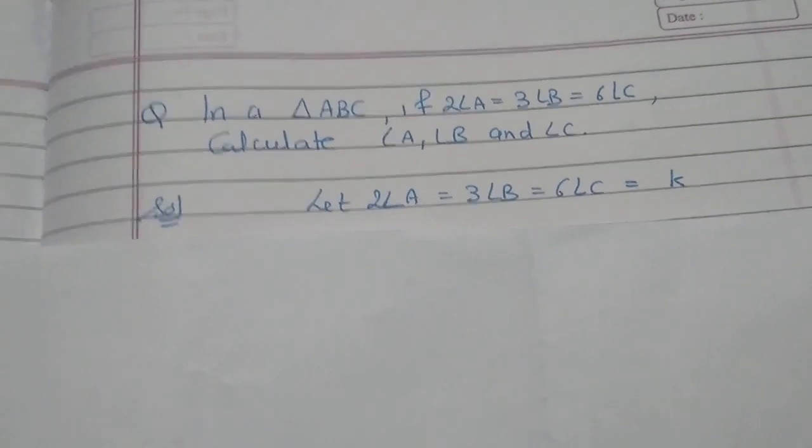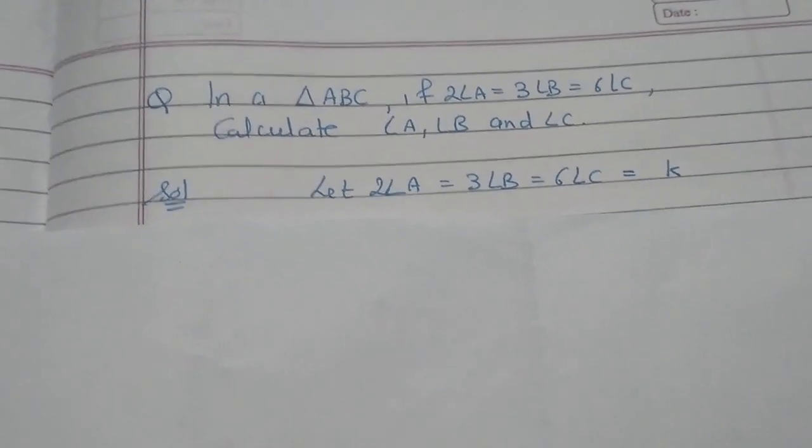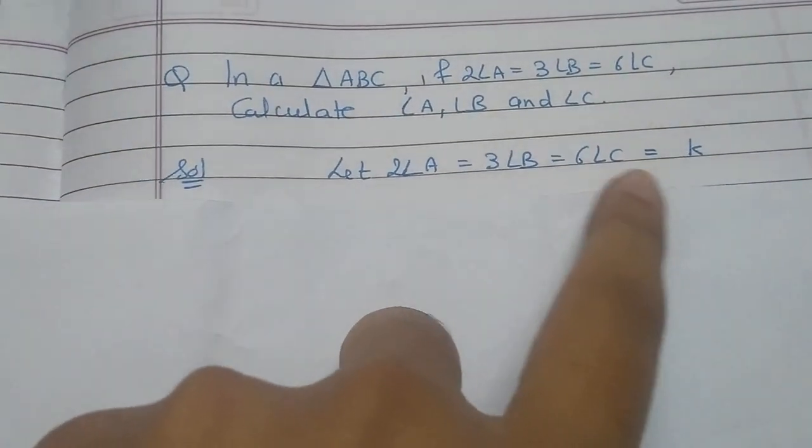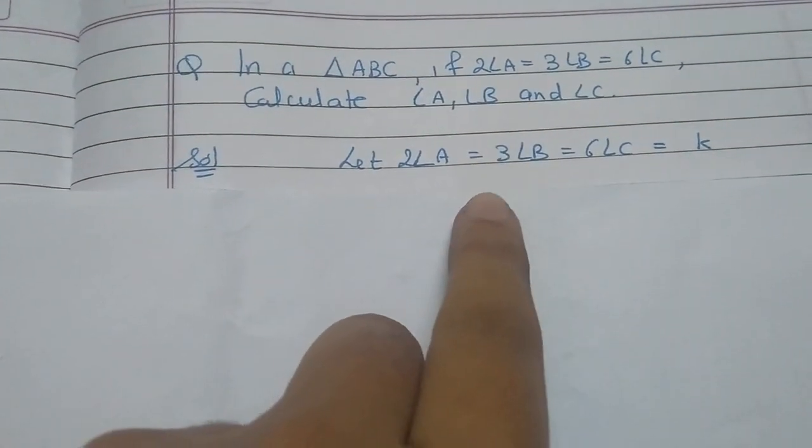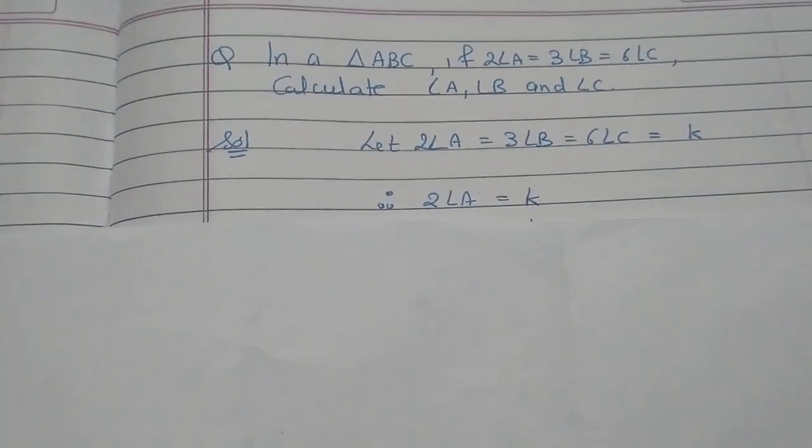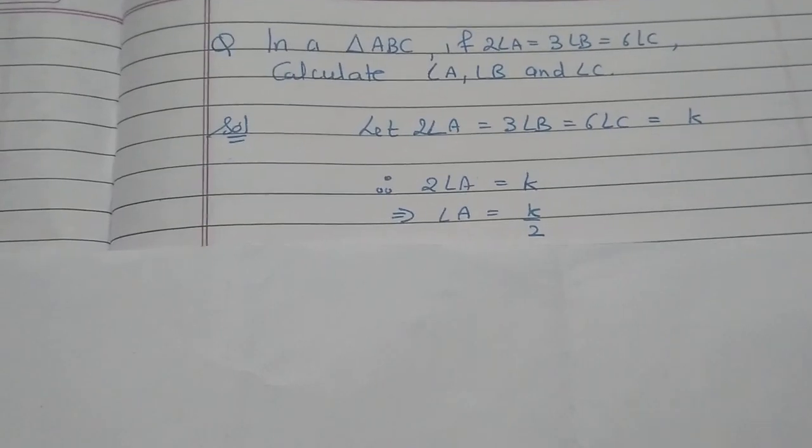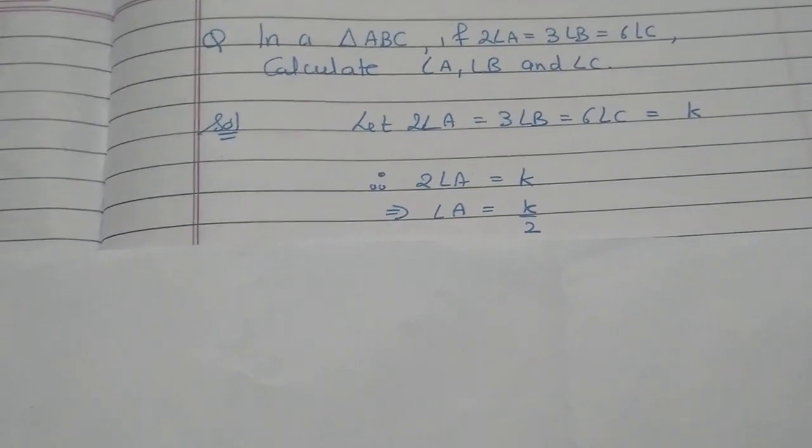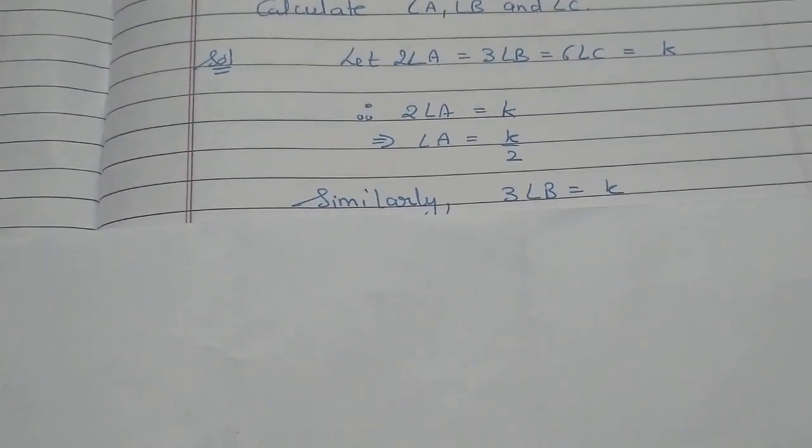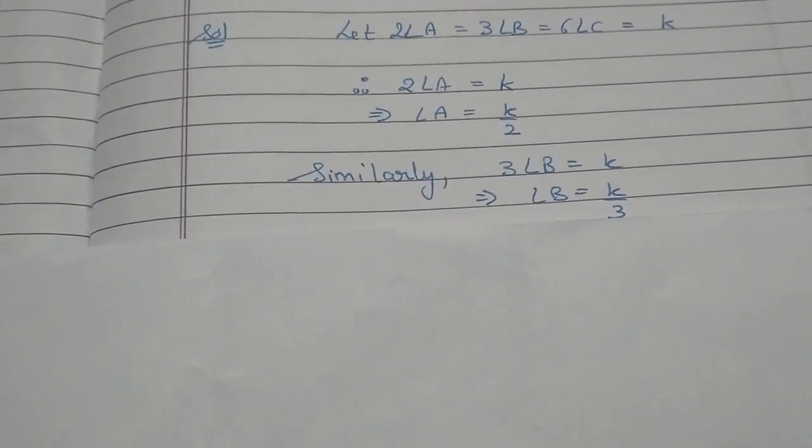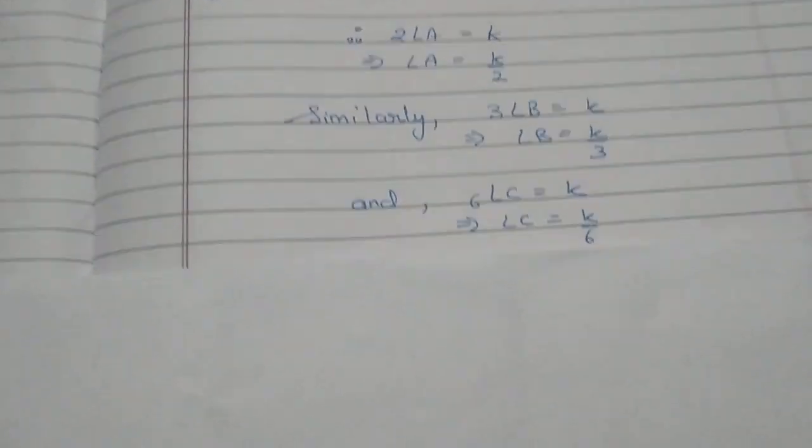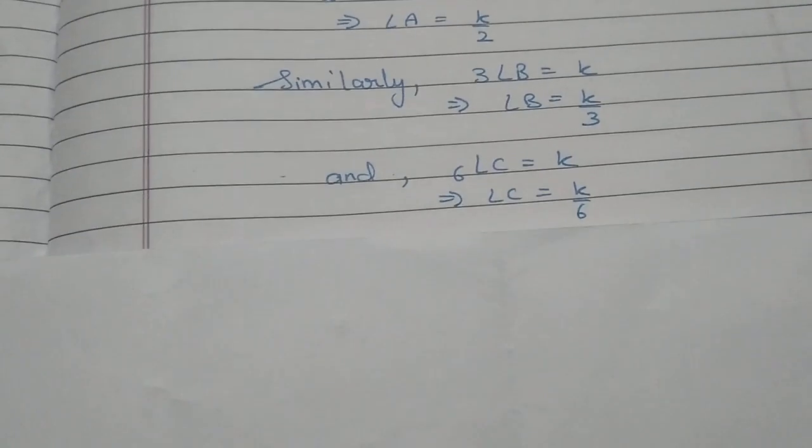So this means that in this case, 2 angle A is equal to K, which means angle A is equal to K upon 2. Similarly, 3 angle B is equal to K, then angle B is equal to K upon 3, and angle C is equal to K upon 6.